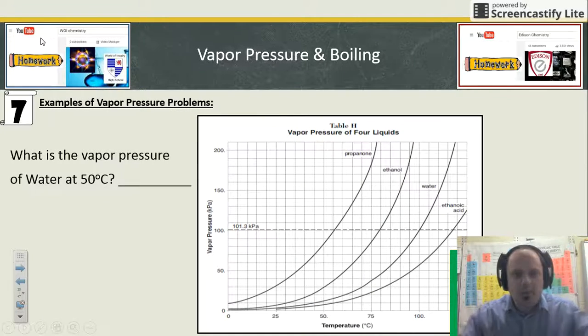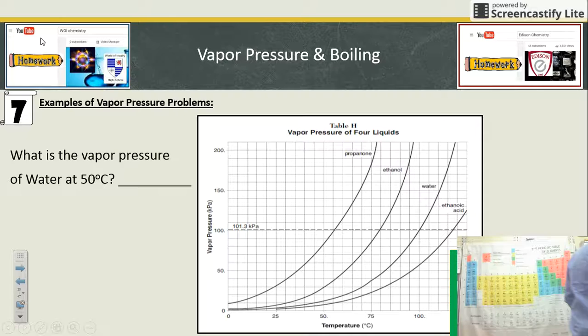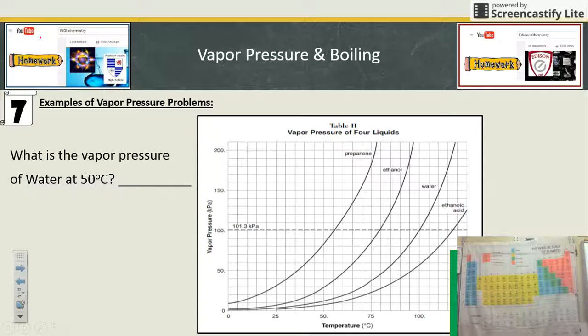Example of types of problems here: What is the vapor pressure of water at 50 degrees Celsius? It's a graph reading problem. Let me show you how to do it. 50 degrees Celsius, vapor pressure of water. You go to temperature 50 and you trace up until you hit the water curve right there.